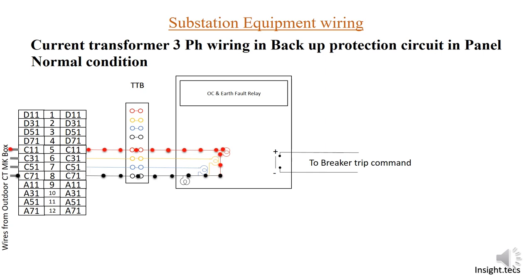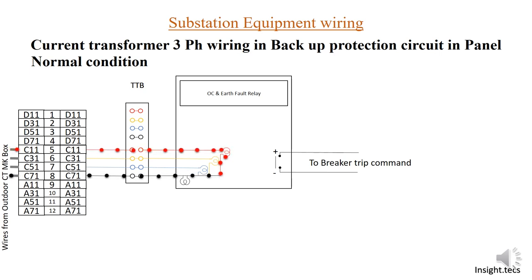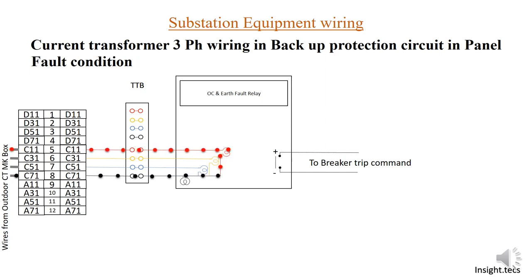In normal condition, this is how the current flows into the overcurrent earth fault relay through the TTB from the wires coming from the current transformer. Now, when there is overcurrent or a fault in the CT, a greater amount of current flows in that phase. You can see the overcurrent flowing through the TTB into the relay. Due to this overcurrent, a trip command is sent to the breaker. Once the trip command is sent, the positive meets the negative, the circuit is completed, and the breaker trips.